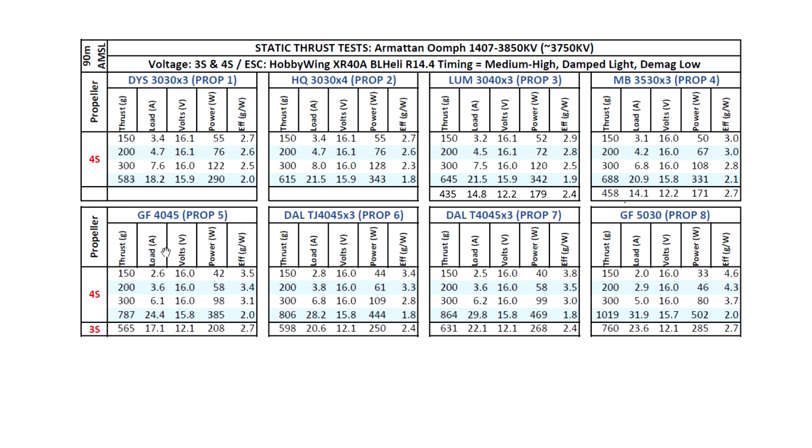So here's the 4-inch props, pretty impressive also, 787 grams. And as we go on to the more aggressive props, the Dow T4045, pretty good numbers at 864. This is one of the popular props for this motor these days. And the one that blew me away was this GenFan 5030, breaking the 1kg barrier, which I didn't think I would ever see with this size motor. But here it is, 1019 grams at 32 amps. So that's pretty high.